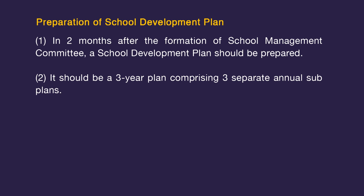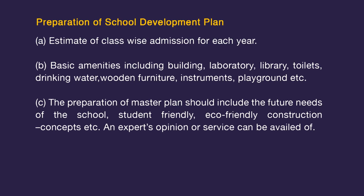Regarding preparation of the school development plan: it should be prepared within two months of the formation of the SMC. It should be a three-year plan comprising three separate annual sub-plans. The plan should include estimates of class-wise admission for each year, basic amenities including building, laboratory, library, toilets, drinking water, wooden furniture, instruments, and playground. The master plan should include future needs of the school, student-friendly and eco-friendly construction concepts.